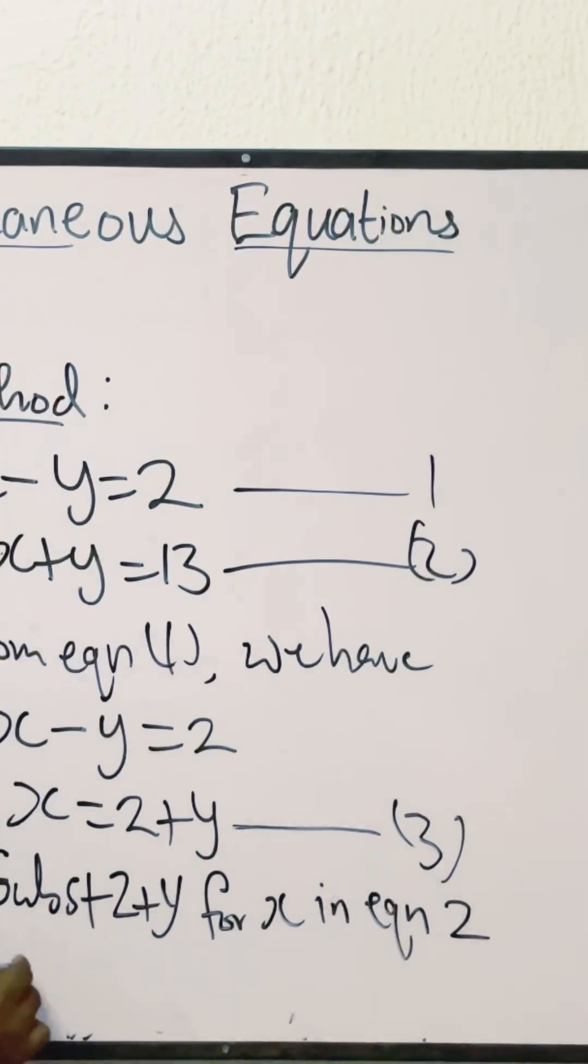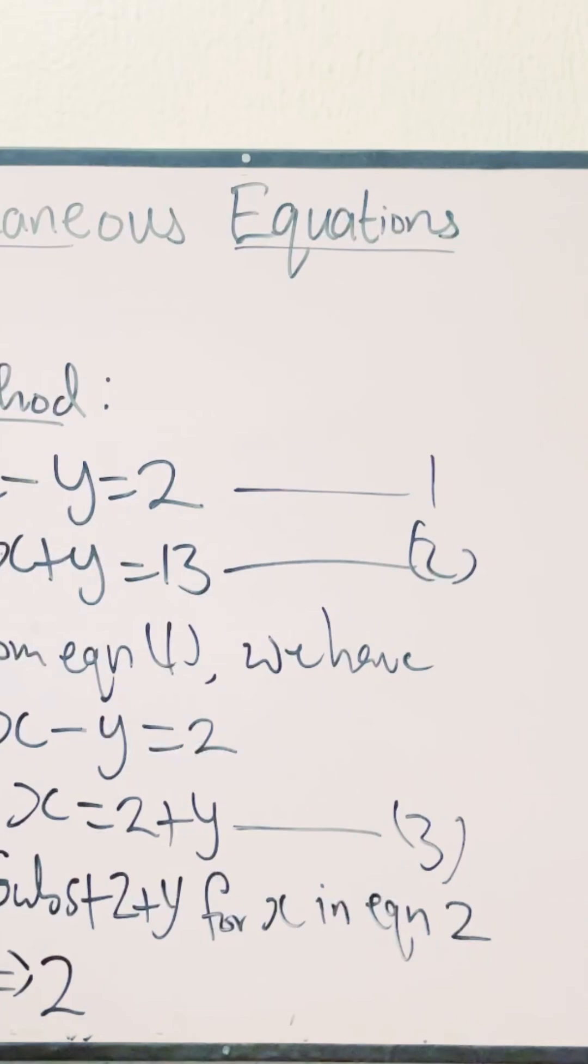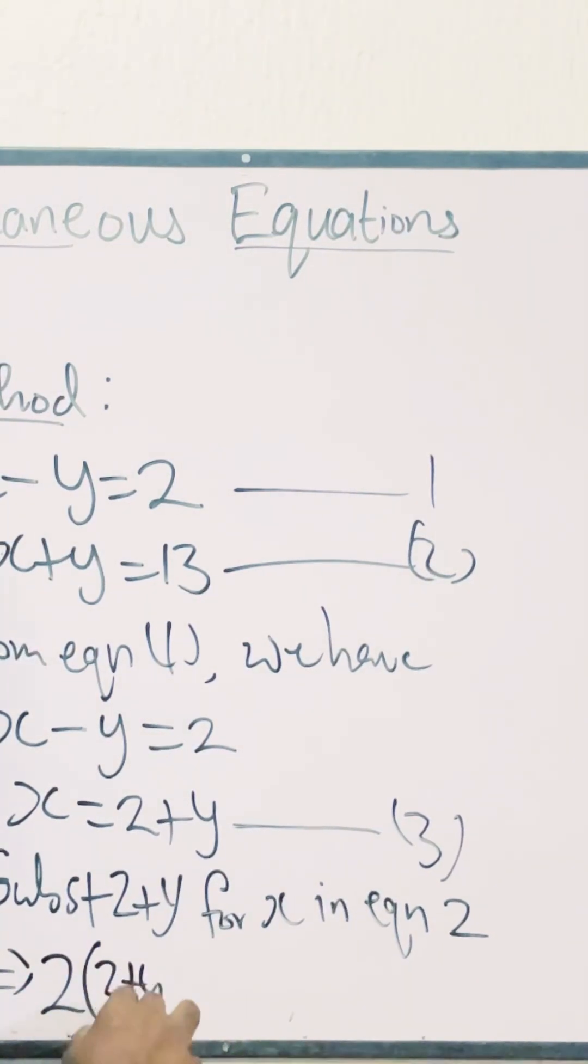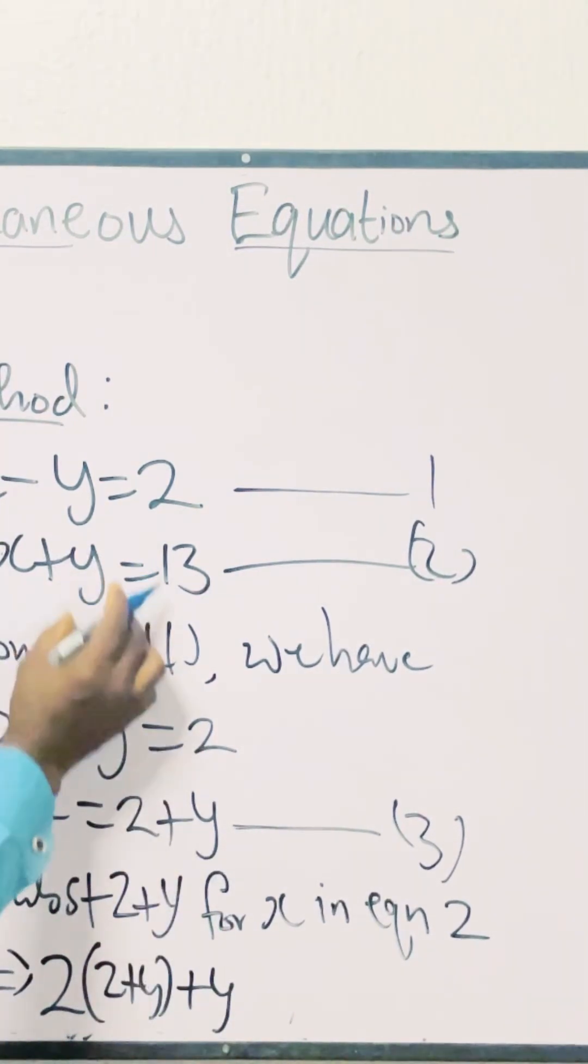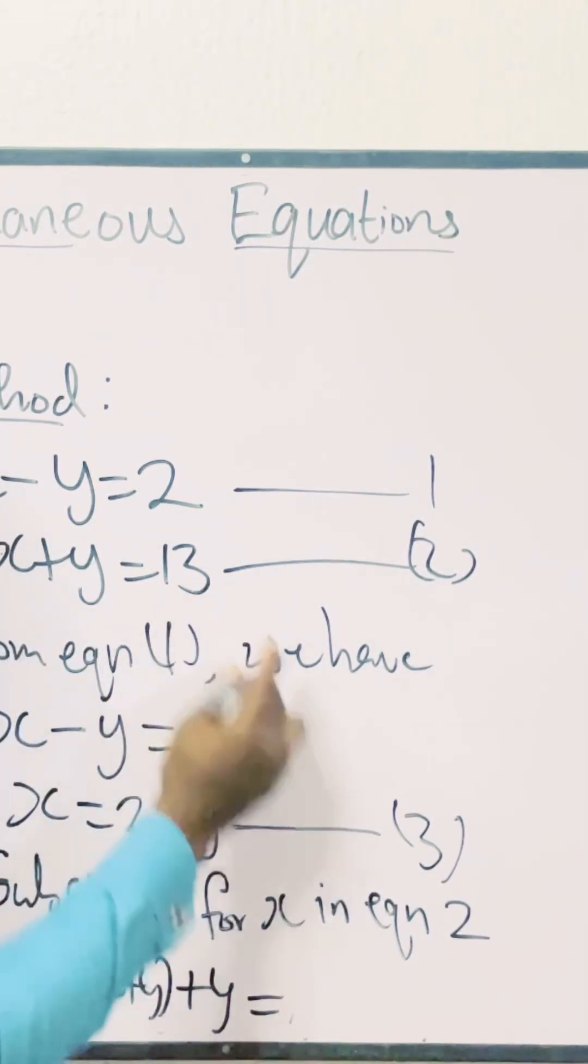So in equation 2, let's go ahead with our substitution. We open a bracket, 2 times open bracket 2 plus y close bracket instead of x. And then every other thing remains. We have plus y equals 13.